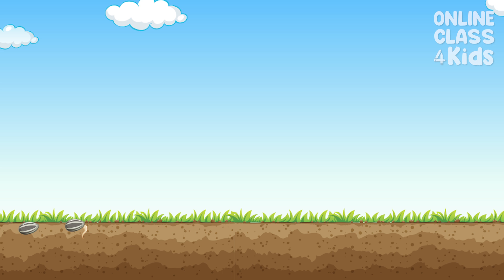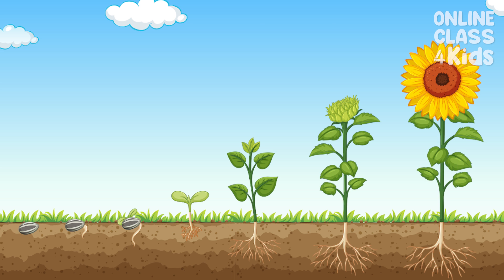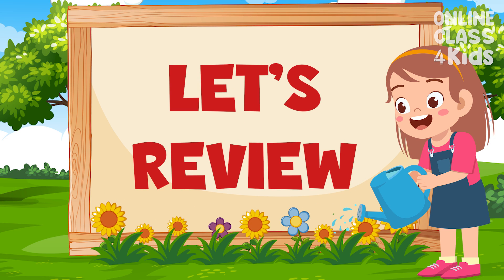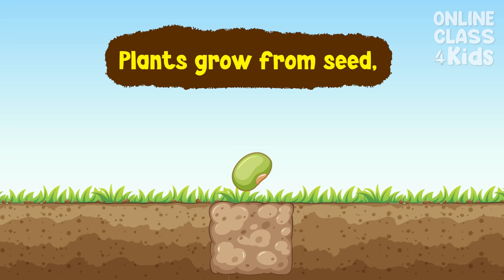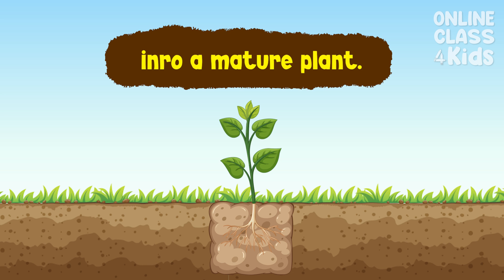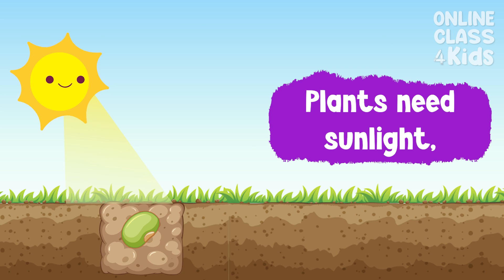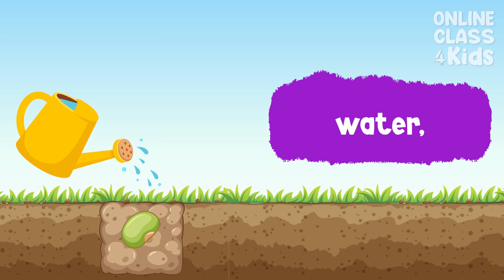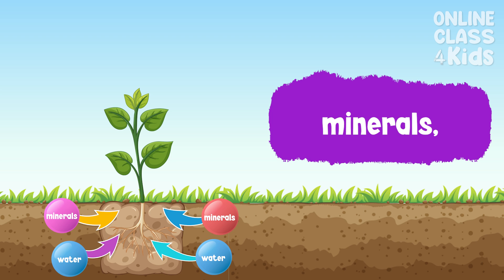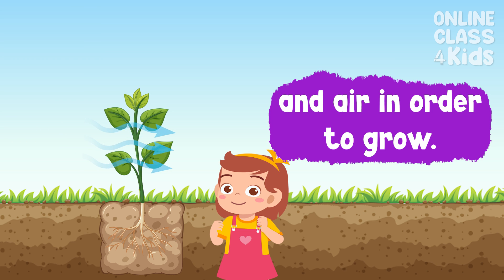All these help the seedling grow into a mature plant. Plants grow from seed to seedling into a mature plant. Plants need sunlight, water, minerals, and air in order to grow.